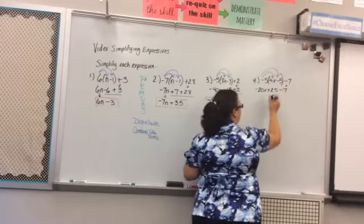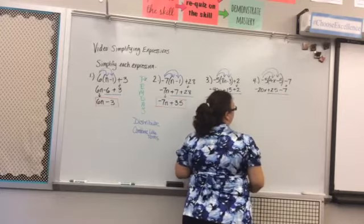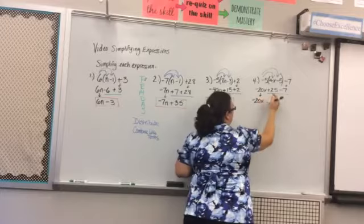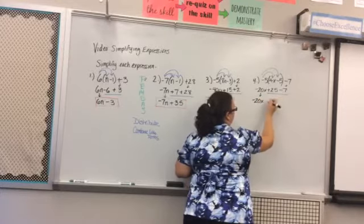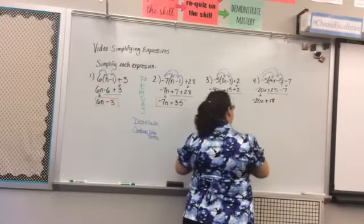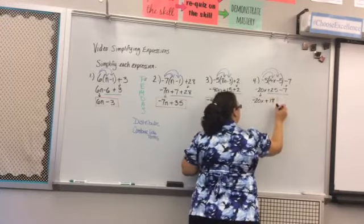Then I'm going to combine my like terms 25 minus 7. Before that I'm going to bring this negative 20x down. Positive 25 minus 7 is going to be 18, a positive 18 so plus 18. So our final answer is negative 20x plus 18.